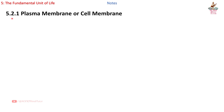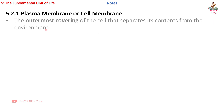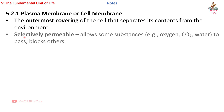Section 5.2.1: Plasma membrane, or cell membrane — the outermost covering of the cell that separates its contents from the environment. It is selectively permeable, allowing some substances like oxygen, CO2, and water to pass, while blocking others.